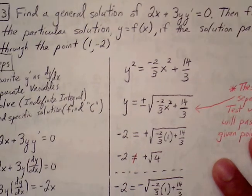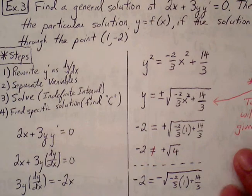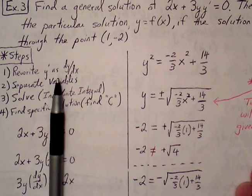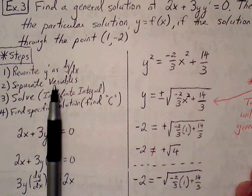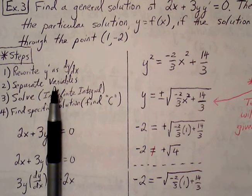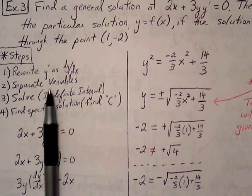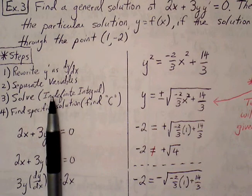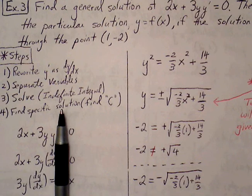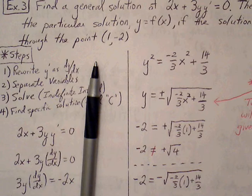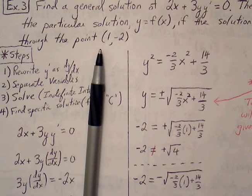Let me highlight the steps that we'll be taking. We're going to first rewrite y prime as dy over dx. Next, we're going to separate the variables, having the y's on the left and the x's on the right. Then solve our indefinite integral. And finally, find the specific solution by finding the c value — we'll plug in the ordered pair (1, negative 2) to do that.